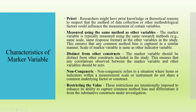There are key characteristics of the marker variable. First, it is chosen a priori — researchers have prior knowledge or theoretical reasons to suspect methodological factors could influence measurement. Second, it is measured using the same method as other variables — same scale and same response format — ensuring common method bias is captured in a similar manner. Third, it should be distinct from other constructs; any observed correlation between the marker variable and other variables should theoretically be zero. If it is non-zero, common method bias is present. Fourth, it is non-congeneric, meaning items within the marker variable do not share a common underlying factor with other constructs, and no cross-loadings are allowed.